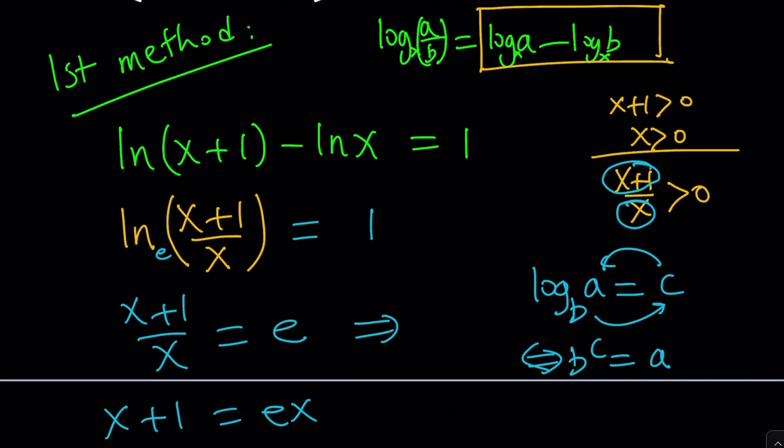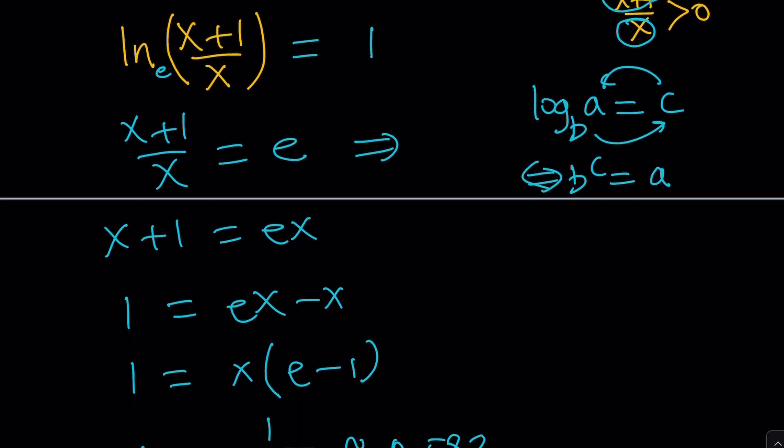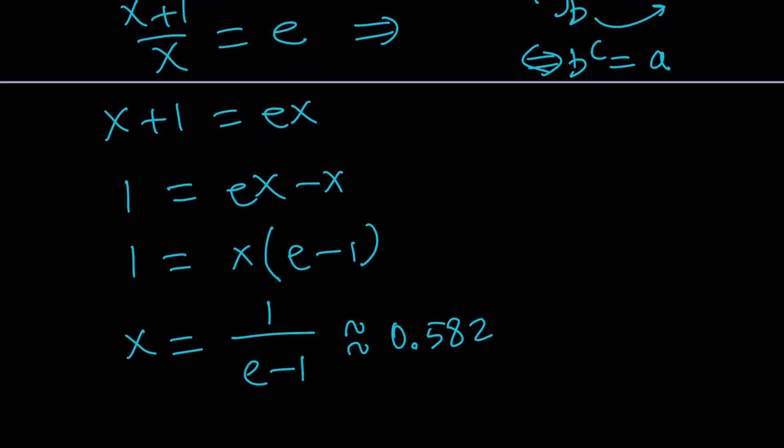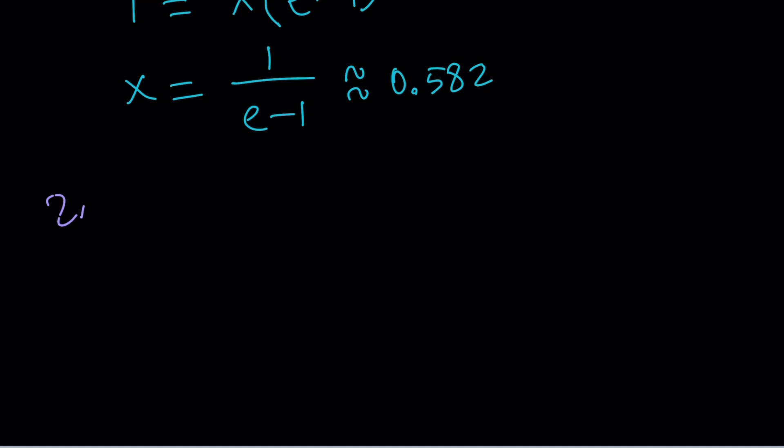And this is going to be about 0.582. So that's going to be the x value for which this equation holds. And again, we do need the x, x+1 values to satisfy the domain of this function. Let's go ahead and take a look at the second method, and then we're going to be looking at the graph of these two functions.